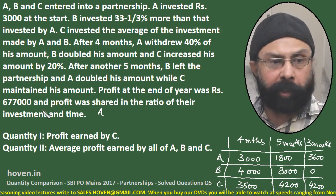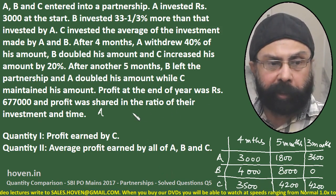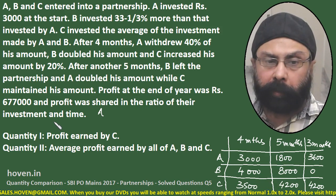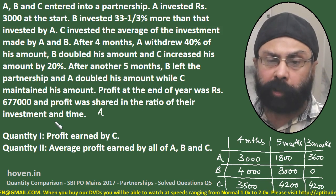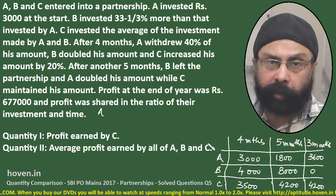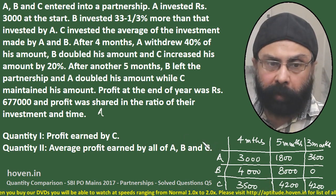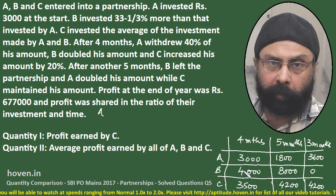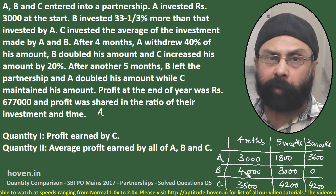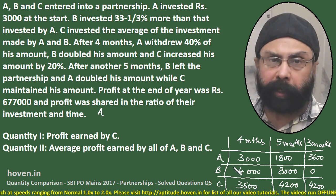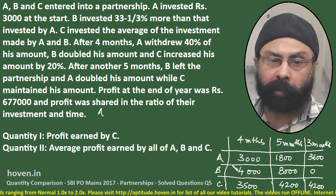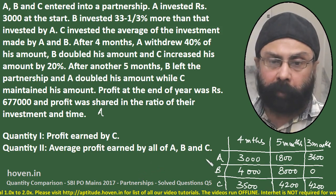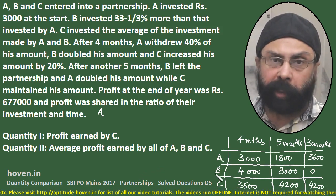Profit at the end of the year was given, and profit was shared in the ratio of their investment and time. This means the share is in proportion to the money months. We will need to calculate the money months for each partner. The concept of money months I have always taught for partnerships, and you can go through the videos I have done for the theoretical part on partnerships. Let us calculate the money months of A, B and C.